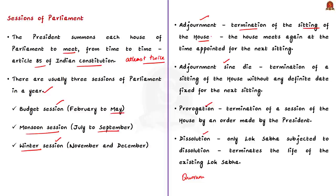Adjournment sine die refers to the termination of a sitting of the house without any definite date being fixed for the next sitting. We should note that the power for both adjournment and adjournment sine die lies with the presiding officer of the house. Now, prorogation refers to the termination of a session of the house by an order made by the president — not by the presiding officer, but by the president of India.